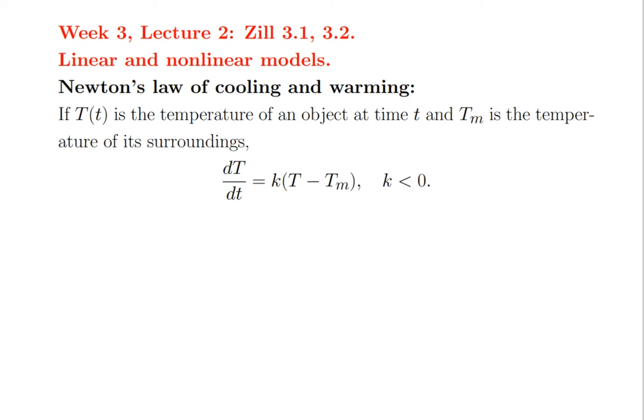So what did Newton discover about how things warm up and cool down? Heat is a famously complicated physical phenomenon, and to get the whole understanding of it worked out really took hundreds of years. But the genius of Newton was that he managed to slice through all the difficulties and get the main part of it. We're going to take an object — I'm thinking about a hot cup of coffee — and the outside temperature is at a fixed temperature, which I'm going to call Tm.